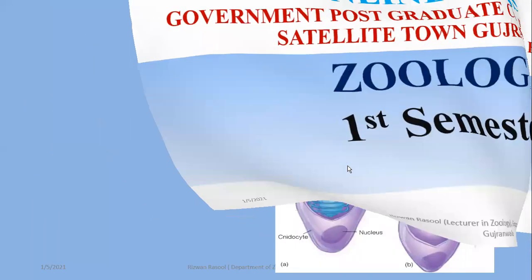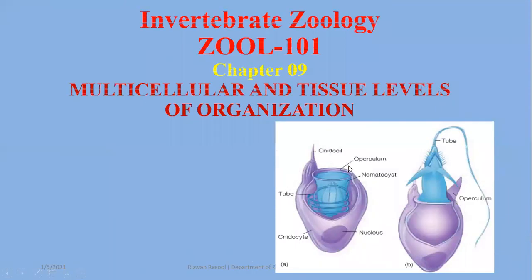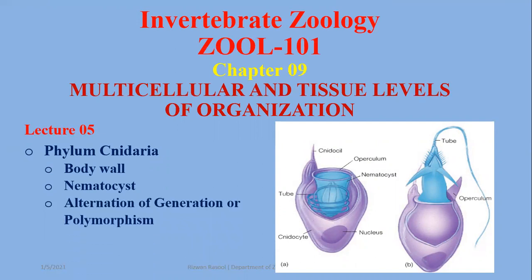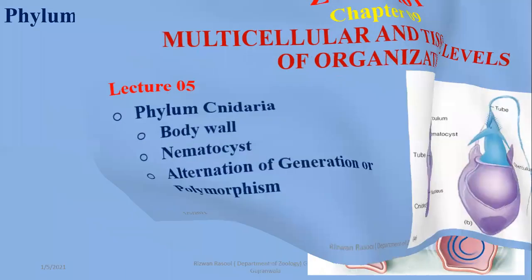Bismillah ar-Rahman ar-Rahim. In this video, we are going to discuss a few aspects of phylum Cnidaria. It is chapter number 9 from the 5th edition of Miller and Harley's Zoology. In this video, we will discuss the body wall of phylum Cnidaria, and the alternation of generation and polymorphism.